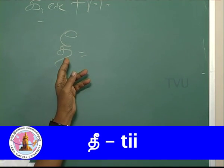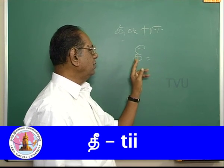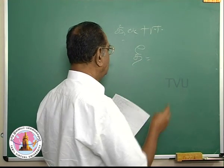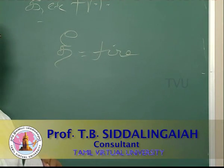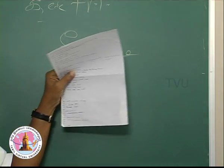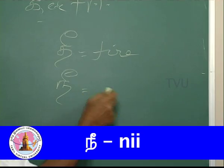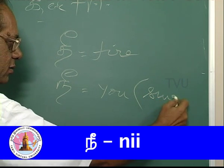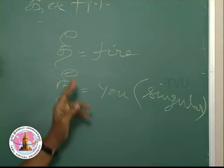A few more words you can have. I hope you can read it independently. Tee, a combination of t plus ee. Tee, a long oval. Tee means fire. Naturally the next letter we can make use of is nee. Nee means you, second person singular.